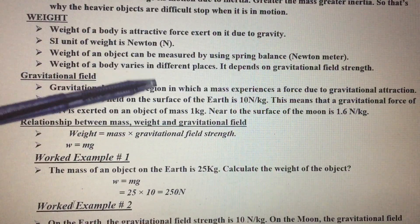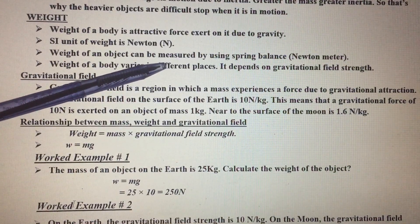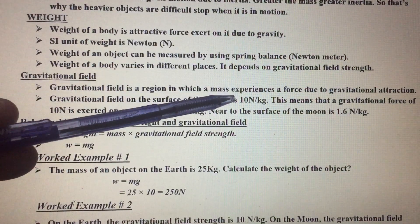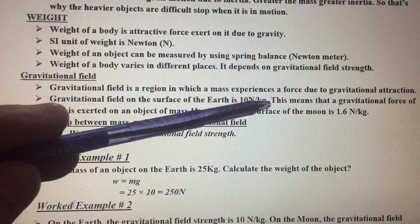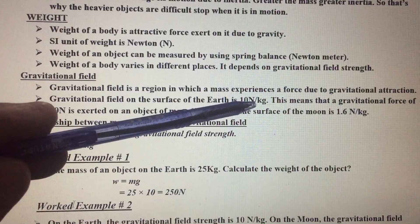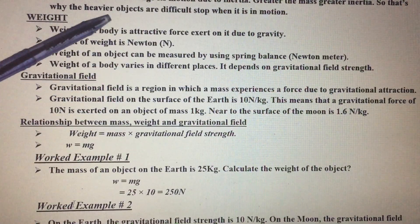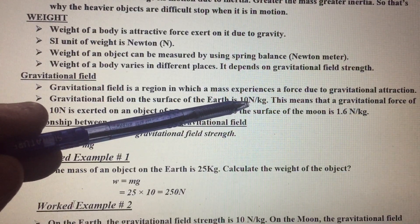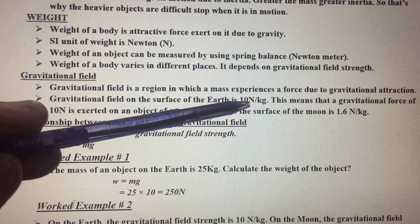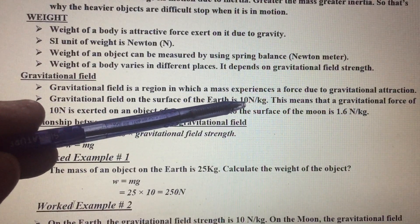When anything falls towards the center of Earth, the acceleration due to gravity is observed as 10 Newton per kilogram. Basically it is 9.8, but when we round it, it becomes 10 Newton per kilogram. On Earth's surface, the acceleration due to gravity is 10 Newton per kilogram.